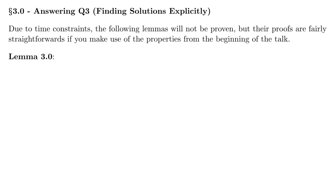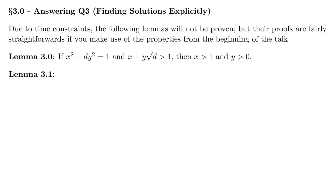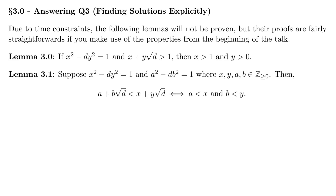Lemma 3.0: if x squared minus dy squared equals 1 and x plus y square root of d is greater than 1, then x is greater than 1 and y is greater than 0. Lemma 3.1: suppose x squared minus dy squared equals 1 and a squared minus db squared equals 1, where x, y, a, and b are all non-negative integers. Then a plus b square root of d is less than x plus y square root of d if and only if a is less than x and b is less than y — the quadratic surds satisfy this ordering if and only if their coefficients do.